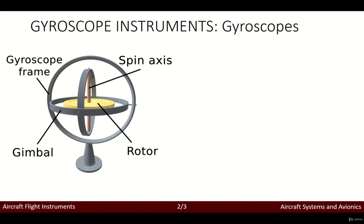So how do gyroscopes work? Gyroscopes are based on a rotor which is always rotating with respect to the same axis. No matter how we spin the gyroscope frame or gimbal, the rotor will continue to rotate on the same spin axis. This is due to the gyroscopic effect, meaning that if we tried to change the spin axis by tilting the rotor directly, we would perceive a force called precession which would counteract the change we were forcing.